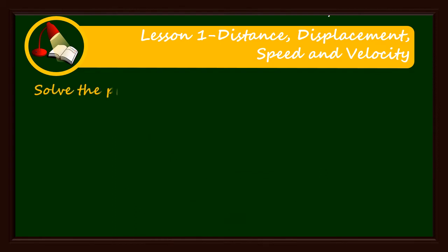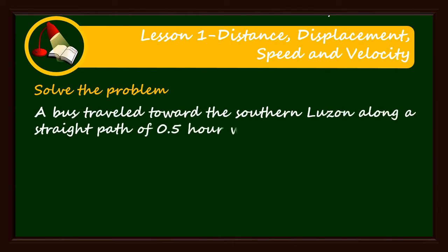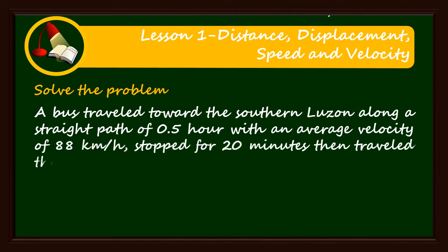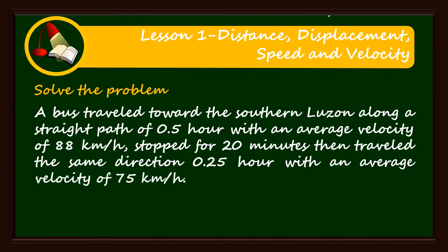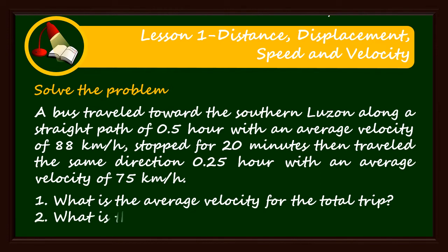Solve the problem. A bus travelled toward southern Luzon along a straight path for 0.5 hour, with an average velocity of 88 kilometre per hour, stopped for 20 minutes, then travelled the same direction for 0.25 hour, with an average velocity of 75 kilometre per hour. Number 1: What is the average velocity for the total trip? Number 2: What is the displacement for the total trip?